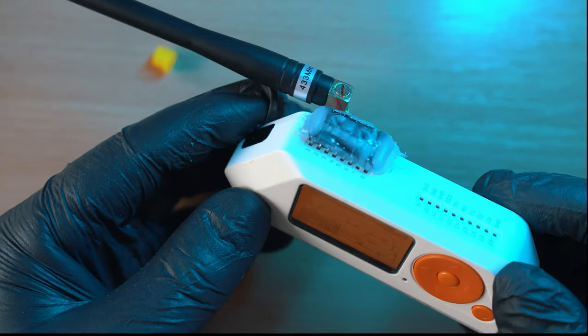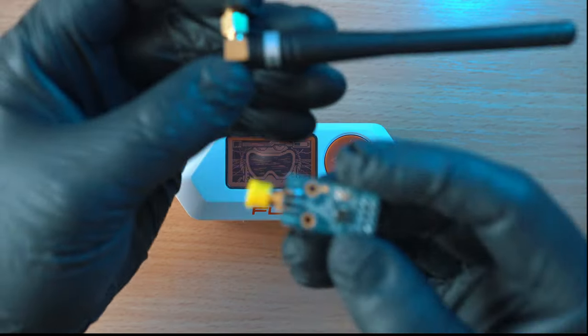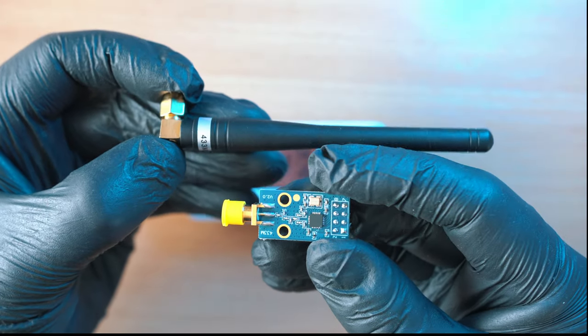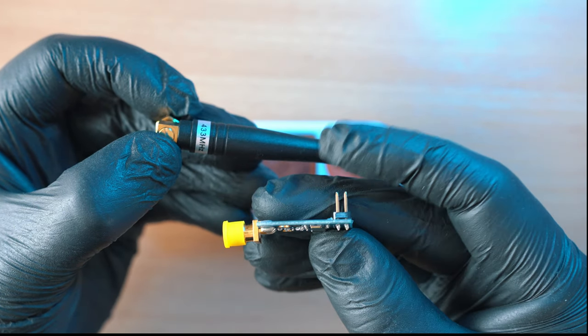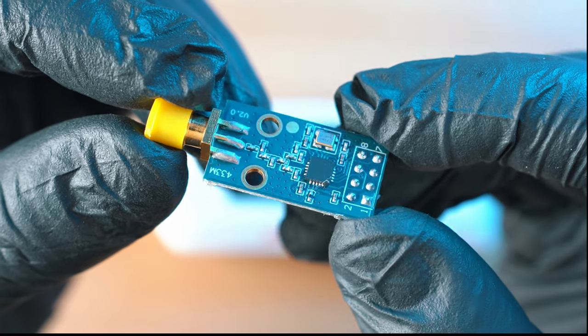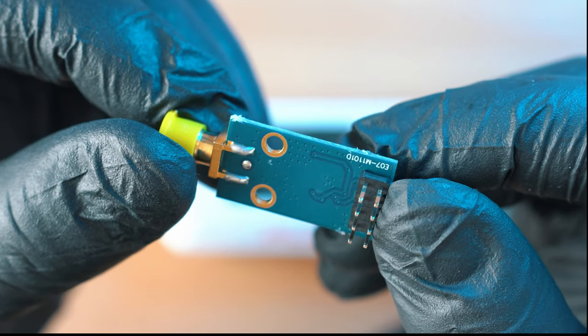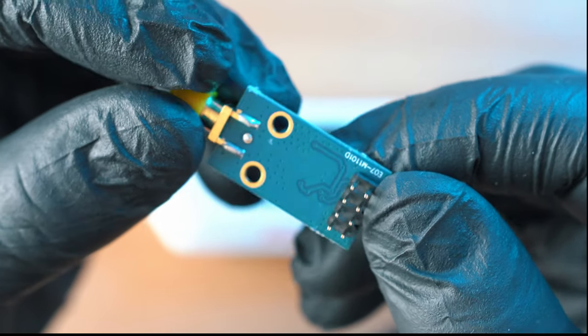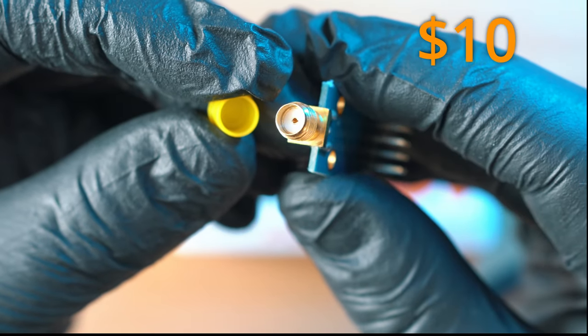CC1101 sub gigahertz external module. You will need CC1101 module and antenna, all are linked in description below. This little thing can greatly extend sub gigahertz features of flipper zero. It will be best 10 bucks you have ever spent.